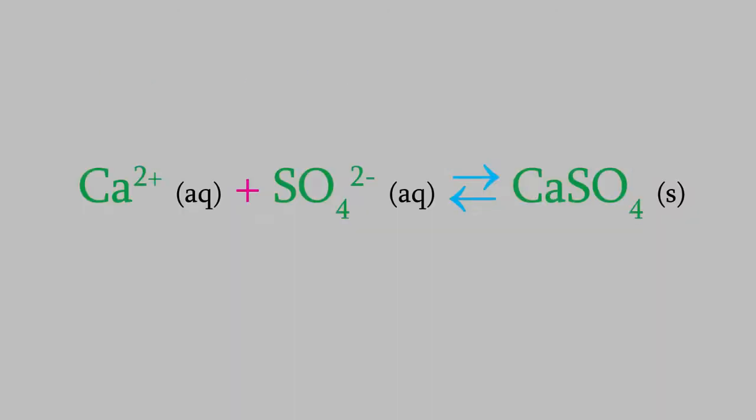Suppose we have this reaction. Calcium ions and sulfate ions react to form solid calcium sulfate, and this reaction is at equilibrium.